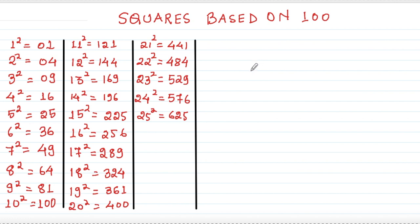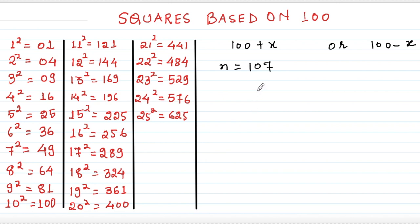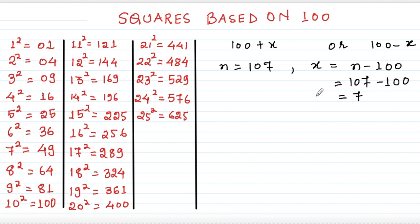Now let me take you to the actual technique of finding out squares of numbers based on 100. 'Based on 100' means the number is something more than 100 or less than 100 — let's say 100 plus x or 100 minus x. Suppose I give you the number 107; n equals 107. Here x is nothing but how much the number is more than or less than 100. So x equals n minus 100, and for 107 this gives x equals 7.